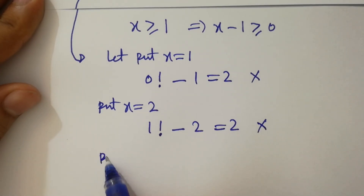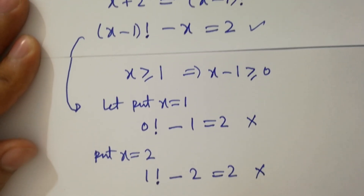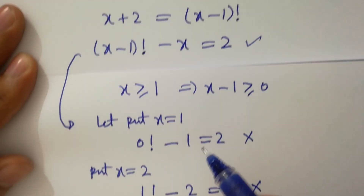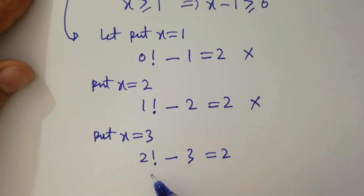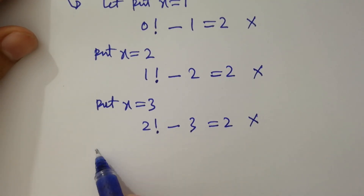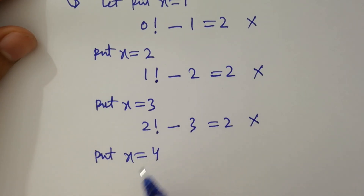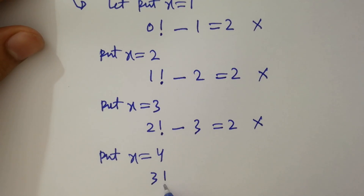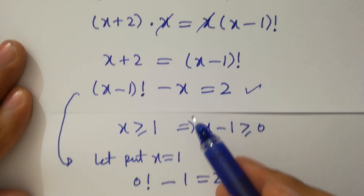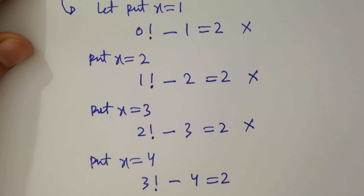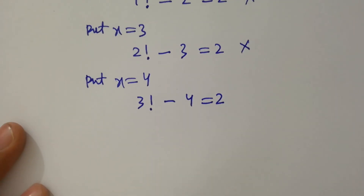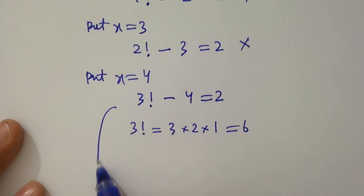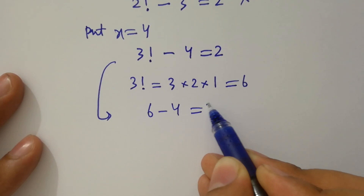Put x equals 3: (3-1) factorial minus 3 equals 2 factorial minus 3 equals 2 minus 3 equals negative 1 — not possible. Put x equals 4: (4-1) factorial minus 4 equals 3 factorial minus 4. Here 3 factorial equals 3 times 2 times 1 equals 6, so 6 minus 4 equals 2 — this is possible!